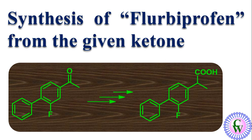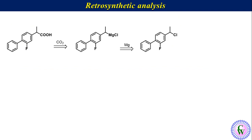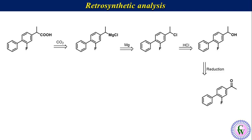To find out the synthetic steps, we will have to do retrosynthetic analysis. Flurbiprofen can be obtained from the carboxylation of a Grignard reagent, which in turn can be obtained from the corresponding chloride. This chloride can be obtained from an alcohol, which in turn can be obtained by the reduction of the given ketone.